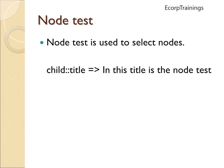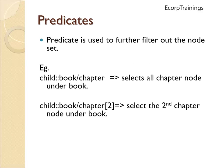Coming to node test: node test is used to select nodes. For example, child::title — in this, 'title' is the node test. In XPath, a predicate is used to further filter out the node set. For example, child::book/chapter selects all chapter nodes under book. Similarly, child::book/chapter[2] selects the second chapter node under book.